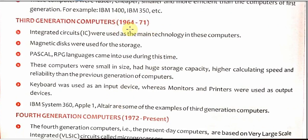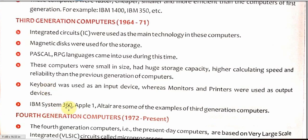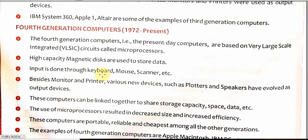Third generation computers arrived in 1964 to 1971. They were now using integrated circuits — IC — and were not using vacuum tubes or transistors. Because of this, they used very, very little electricity. Magnetic disk was used for storage. Pascal and RPG programming languages came into existence during this time, with Pascal being the earliest language. The computers were small in size and their storage capacity was increased. Keyboard was introduced during the third generation. IBM System 360 and Apple One along with the Altair system were developed.